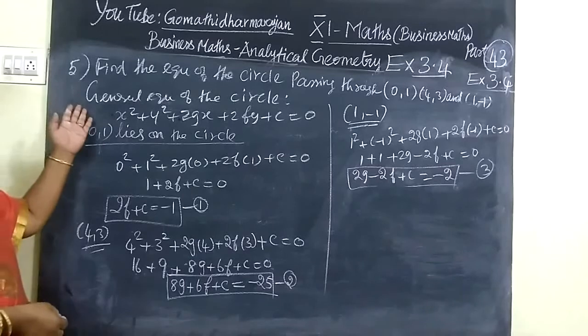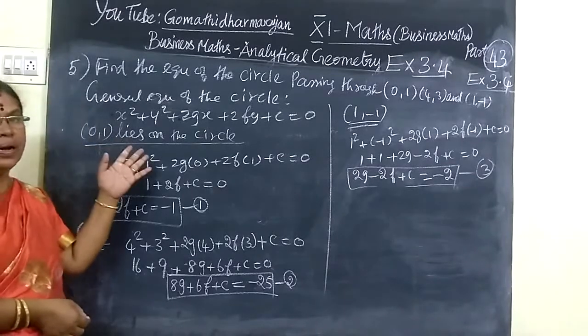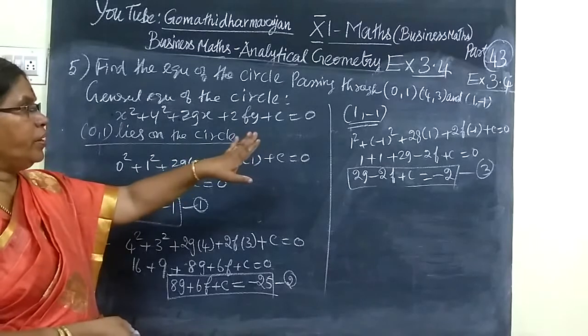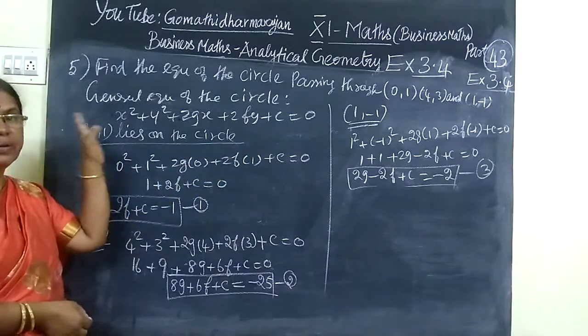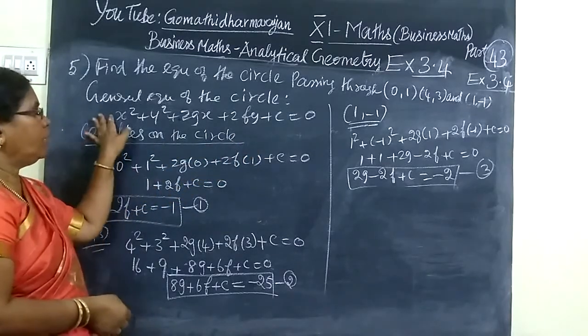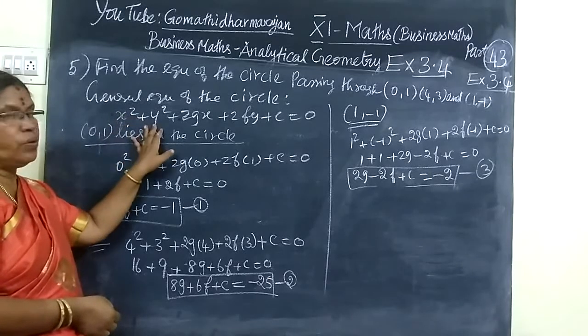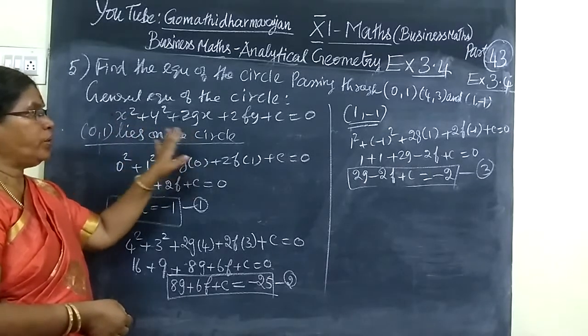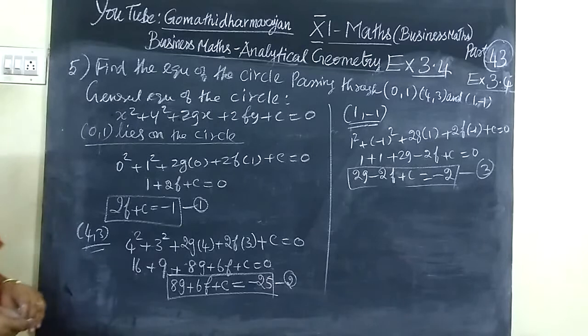You are given a circle with three points on it. You need to find the equation of the circle. You know the general equation of the circle is x² + y² + 2gx + 2fy + c equal to 0.